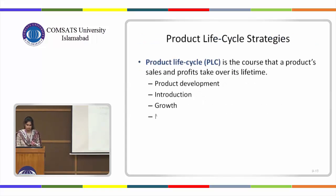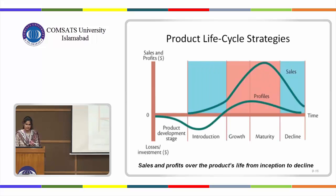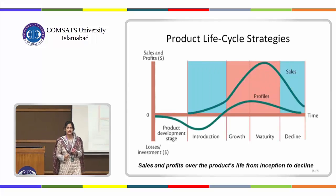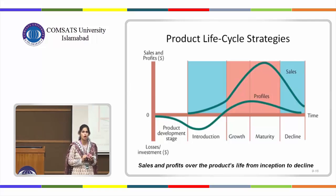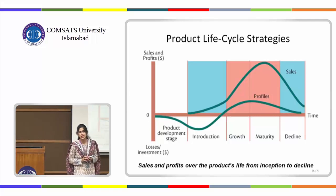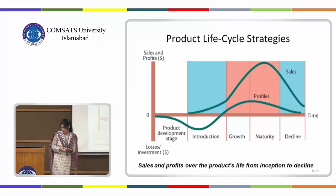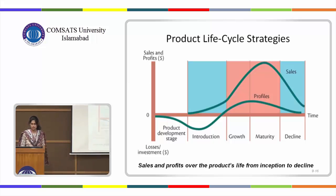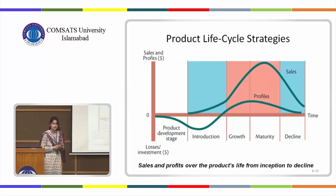We also talked about PLC — the Product Life Cycle. Product life cycle includes all the phases a product goes through during its life cycle. There are distinctly four stages: introduction, growth, maturity, and then the decline phase.